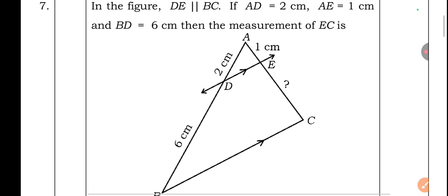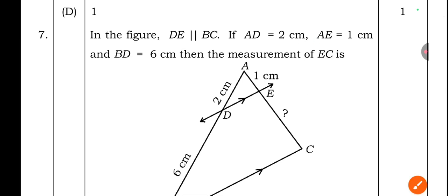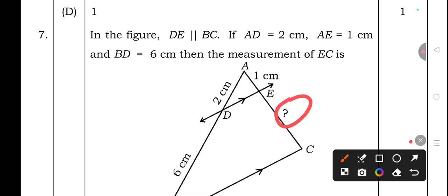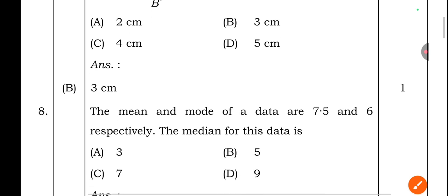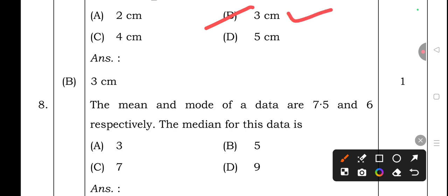Seventh question: In the given figure, D is parallel to BC. If AD = 2 cm, AB = 1 cm, and BD = 6 cm, then the measurement of AC is — option A: 2 cm, option B: 3 cm, option C: 4 cm, option D: 5 cm. The right answer is option B — 3 centimeters.